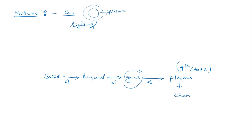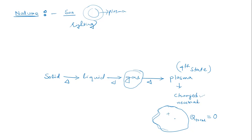In plasma there are some charged particles and some neutral particles in combination. As a whole, the total charge of a plasma is always zero. Macroscopically the total charge is zero, even though charged and neutral particles are present within it.